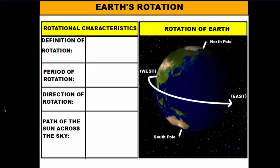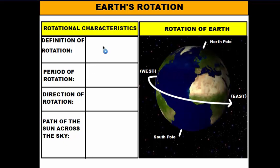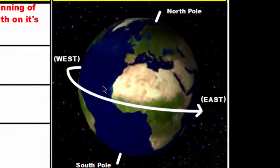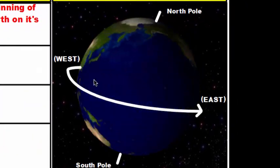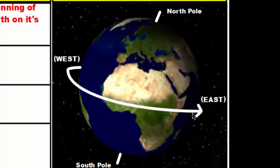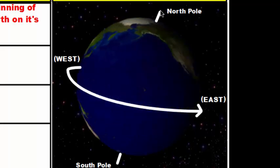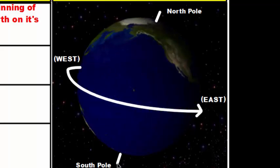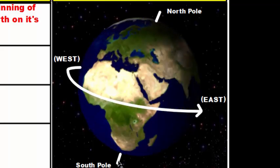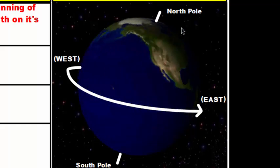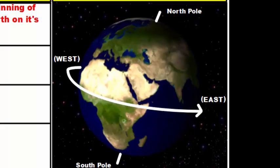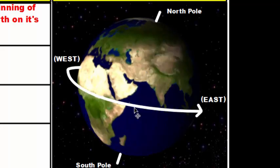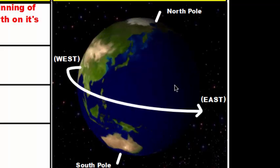The first motion we're going to talk about is Earth's rotation. Earth's rotation is defined simply as the spinning of the Earth on its axis — an imaginary line that runs through the middle of the Earth at a 23.5 degree angle. We identify the top of the axis with the North Pole and the bottom with the South Pole, and that central line is what the Earth spins around.